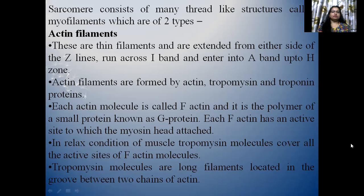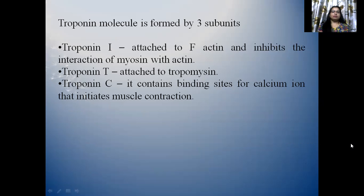Actin filaments are formed by actin, tropomyosin and troponin proteins. Each actin molecule is called F-actin and it is the polymer of a small protein known as G-actin. Each F-actin has an active site to which the myosin head attaches. In the relaxed condition of muscle, tropomyosin molecules cover all the active sites of F-actin molecules. Tropomyosin molecules are thin, long filaments located in the groove between two chains of actin. Tropomyosin molecules are formed by three subunits — troponin I, T and C. Troponin I attaches to F-actin and inhibits the interaction of myosin with actin. Troponin T attaches to tropomyosin, and troponin C contains binding sites for calcium ion.